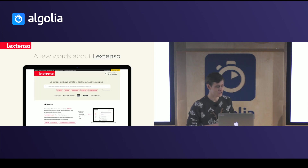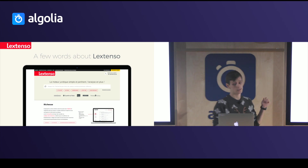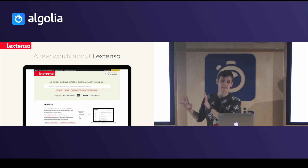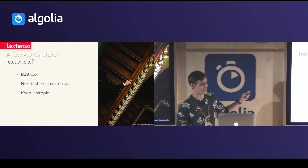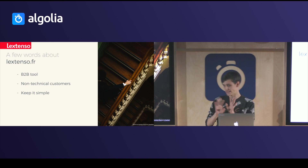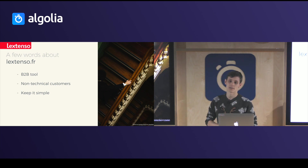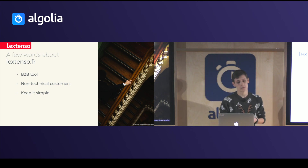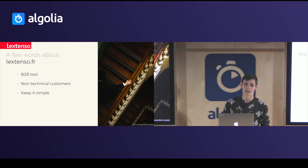A few words about Lexenso, my company. Lexenso is a legal publisher. We are publishing books and legal magazines about laws and justice decisions. Our main product is Lexenso.fr, which you see here. It is a document database for professionals with a search engine, and it is powered by Algolia. The main purpose of Lexenso.fr is as a knowledge database for lawyers and notaries. It is a professional tool for day-to-day usage, also for non-geek customers — that's how I call them. Our customers only use a feature if they understand it.